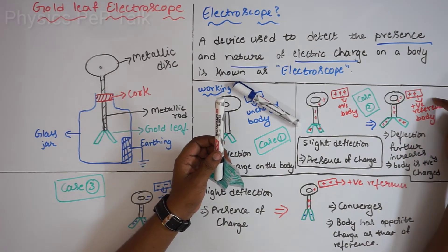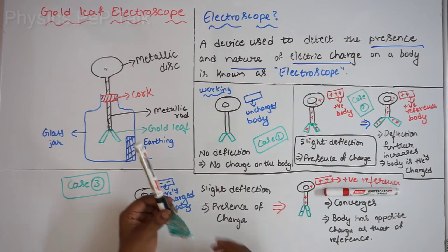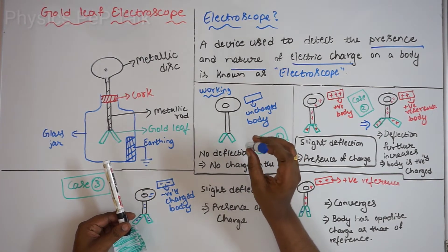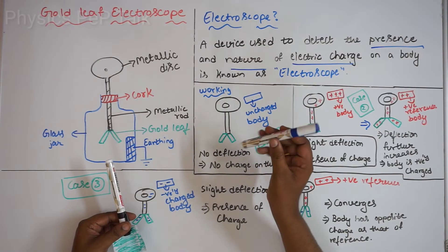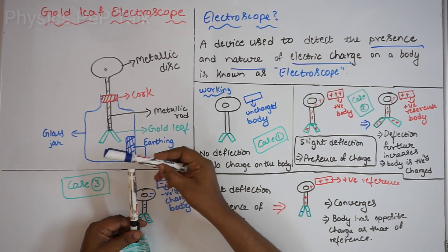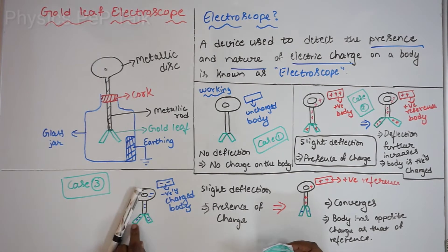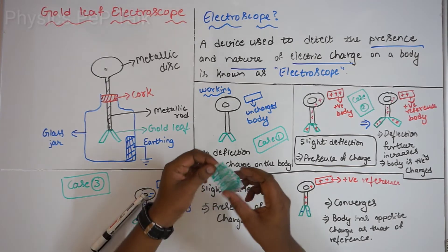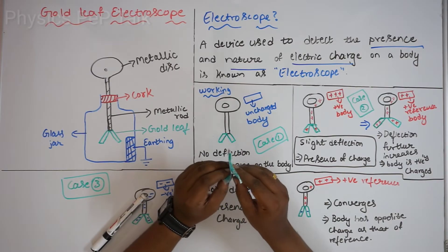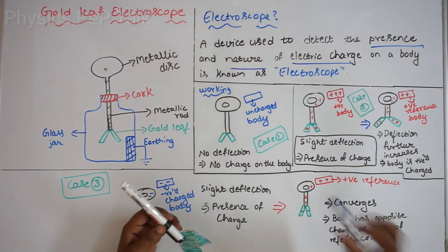Since the deflection increased after introduction of the reference positive charge, the test body is confirmed positive. Now let us discuss what happens if we introduce a negative charge. I will introduce a negatively charged body and touch it. Electrons from this body get transferred onto the metallic rod and accumulate on the gold leaf. The negative charge will be in each gold leaf because it gets evenly charged, being a metallic conductor. As a result there will be a slight deflection, so we can say this body is charged.